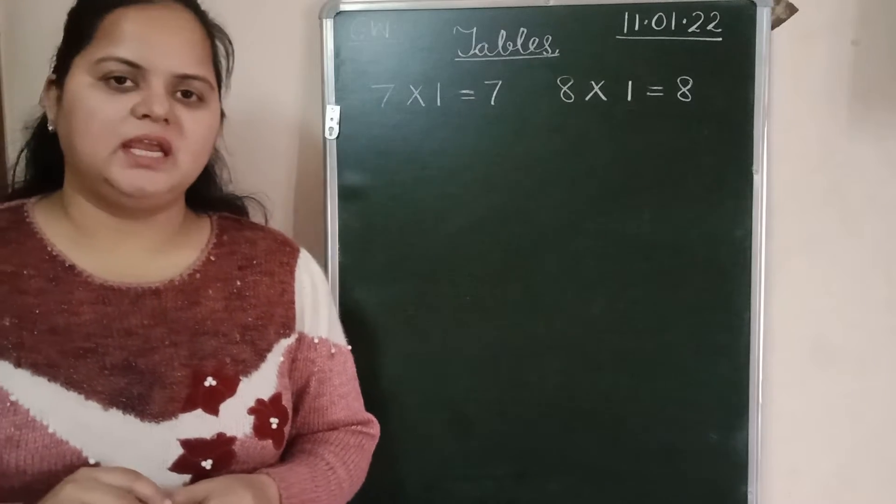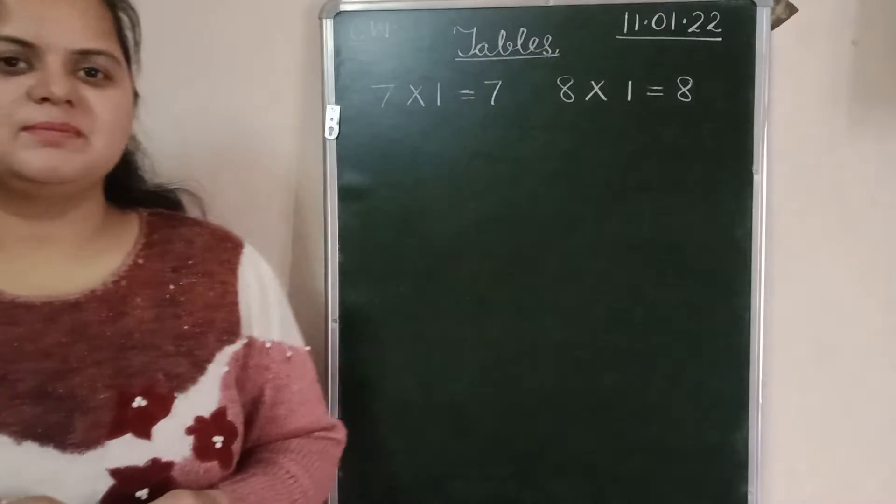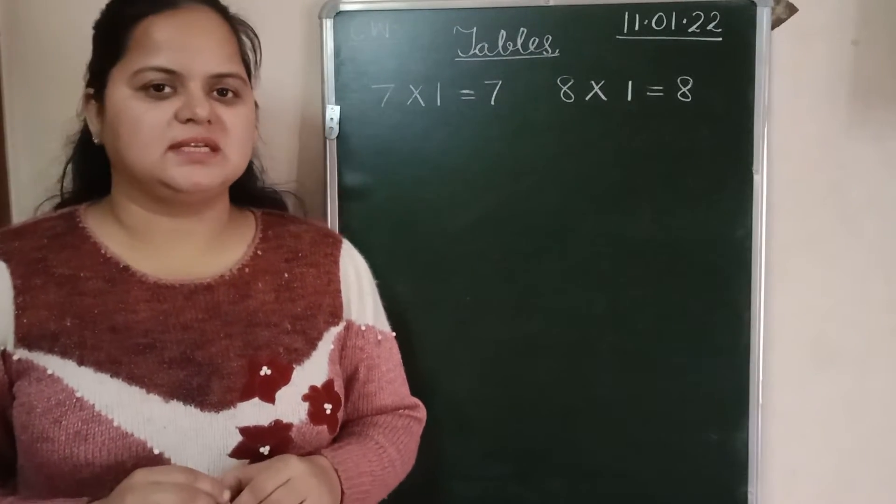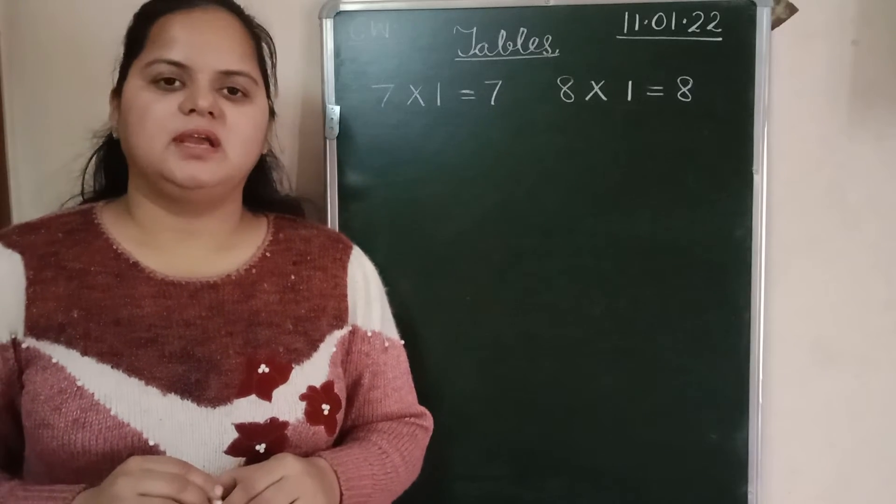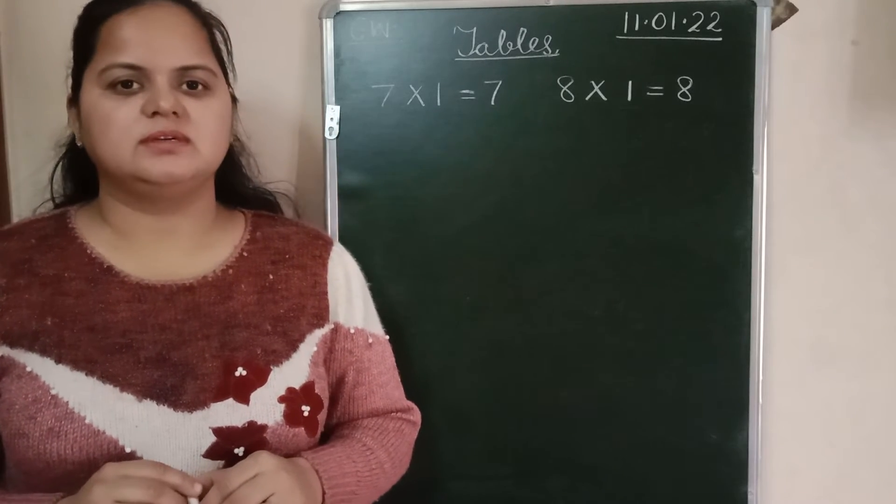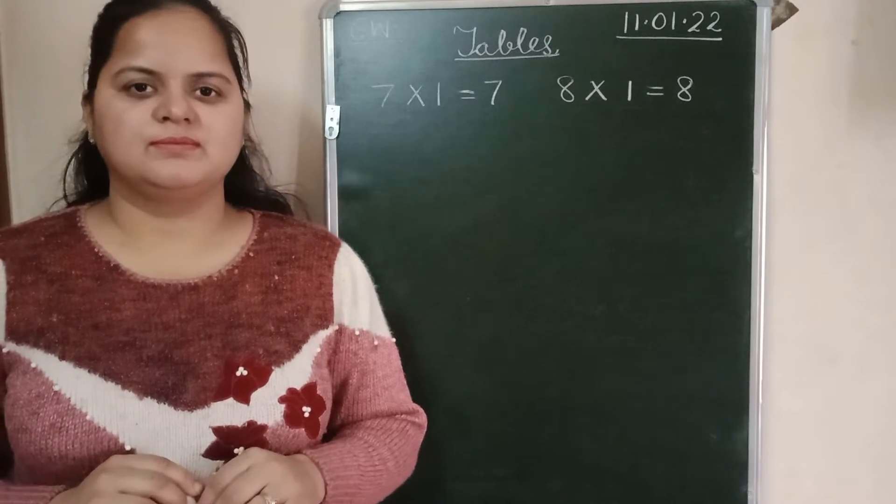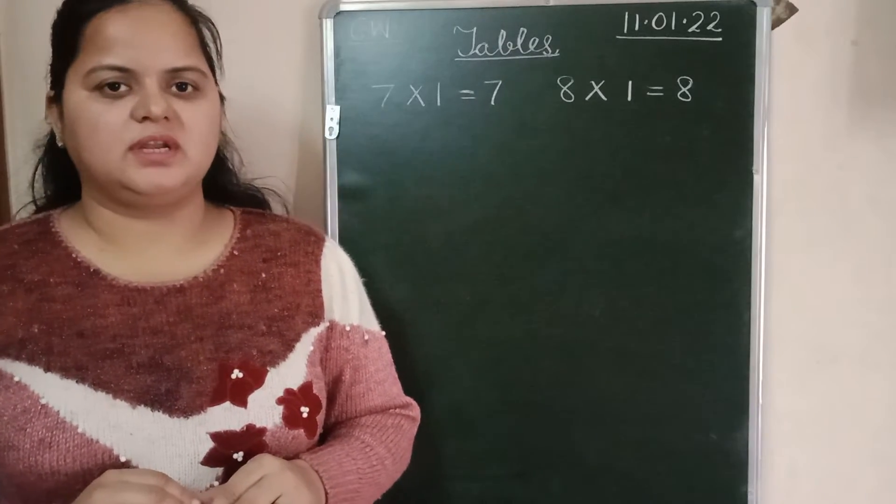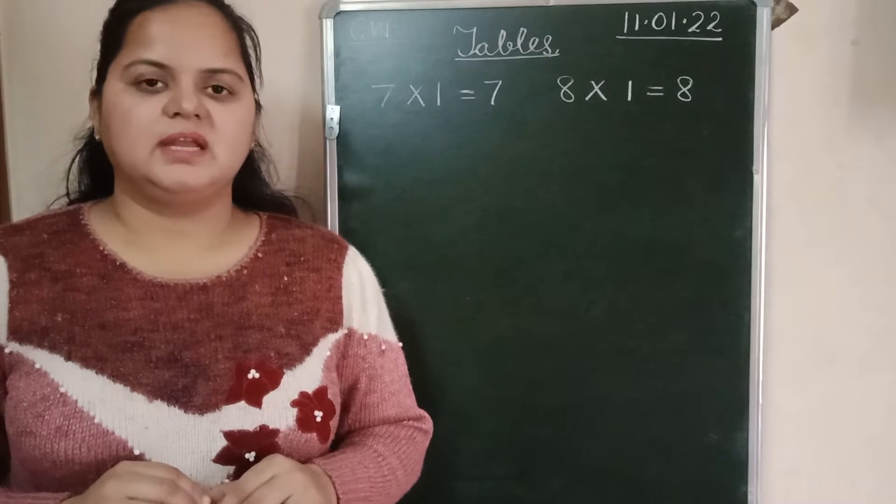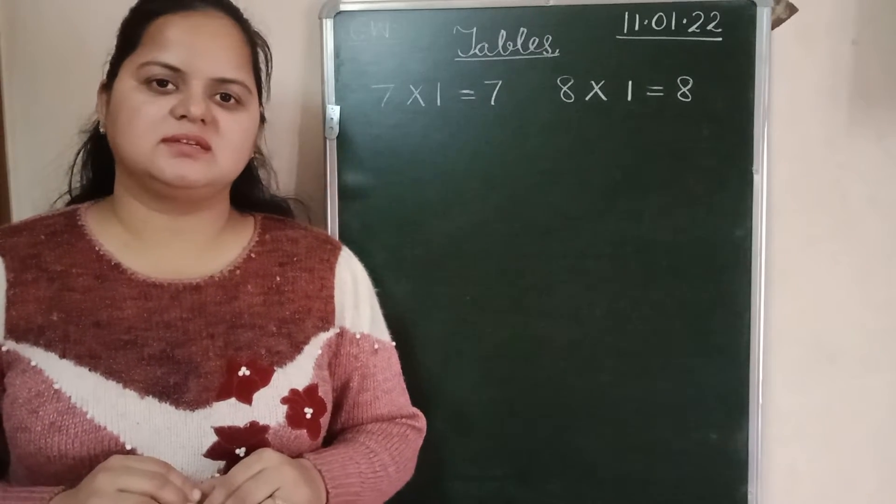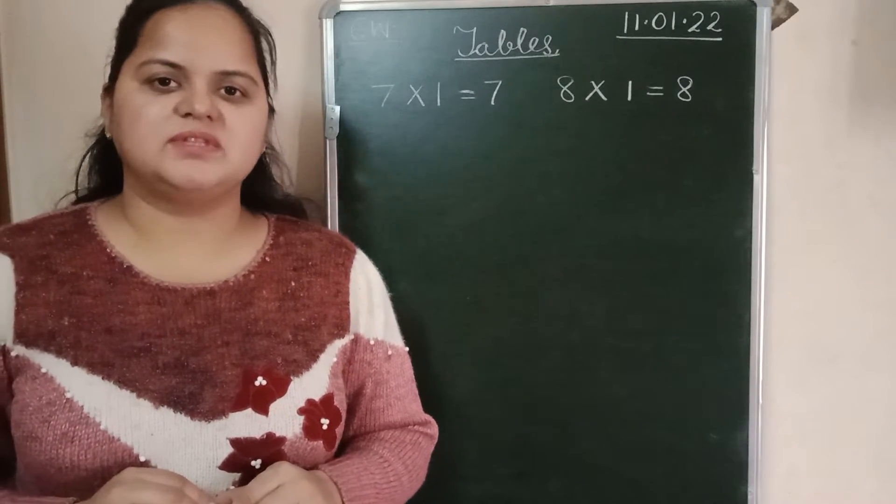Now, speak the table of 8. 8-1s are 8. 8-2s are 16. 8-3s are 24. 8-4s are 32. 8-5s are 40. 8-6s are 48.